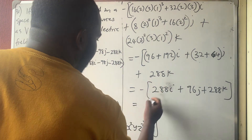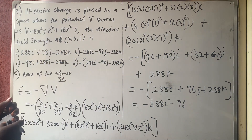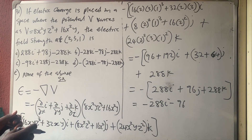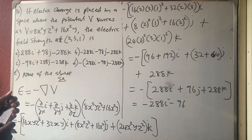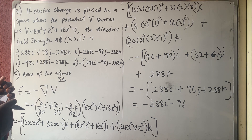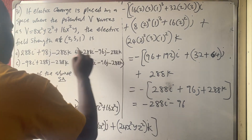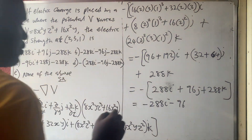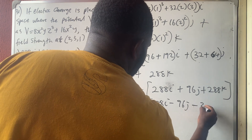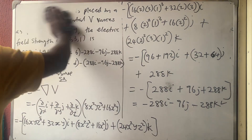Opening the bracket gives −288i − 96j − 288k. So option B is the correct option.